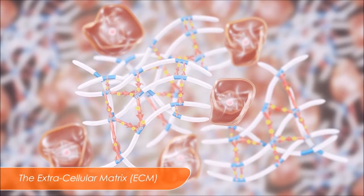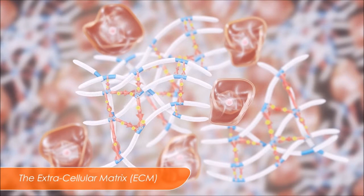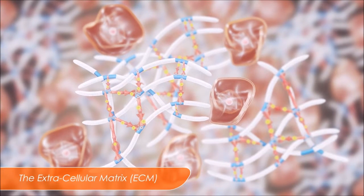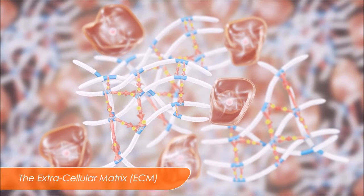Any tissue or organ consists of cells, and outside of the cells is an extracellular matrix. This extracellular matrix is like a scaffold for a building. It gives the shape, holds the bricks, and secures the structure.